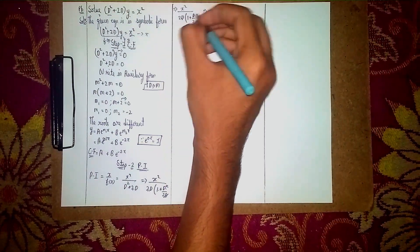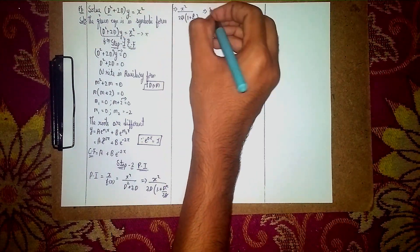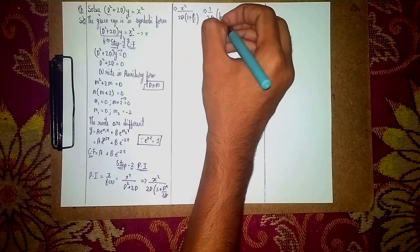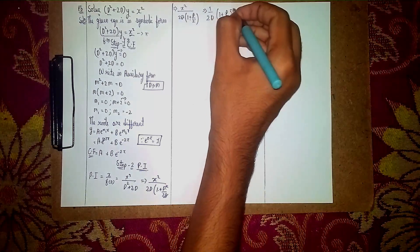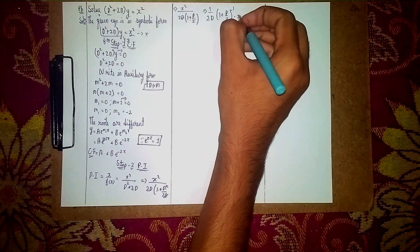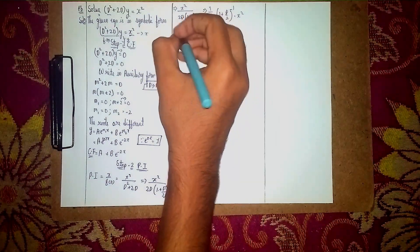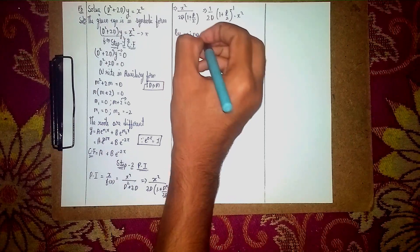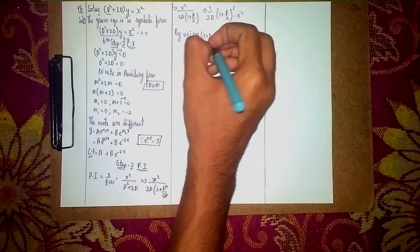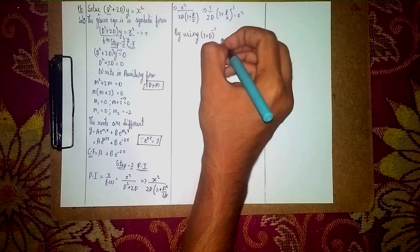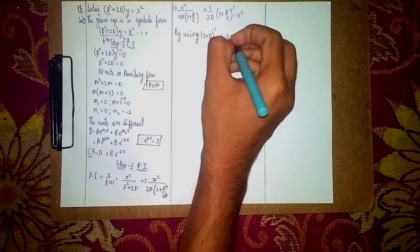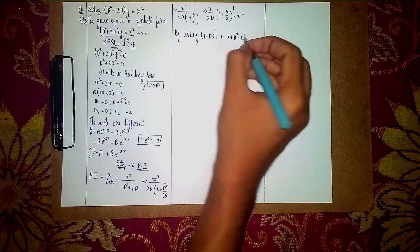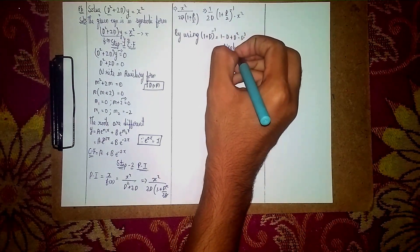Take 1/(2D) outside. Send (1 + D/2) to the numerator as its inverse: (1 + D/2)^(−1) · x². Expanding using the binomial formula: (1 + D/2)^(−1) = 1 − D/2 + (D/2)² − ... We neglect terms beyond D² since the RHS is degree 2.